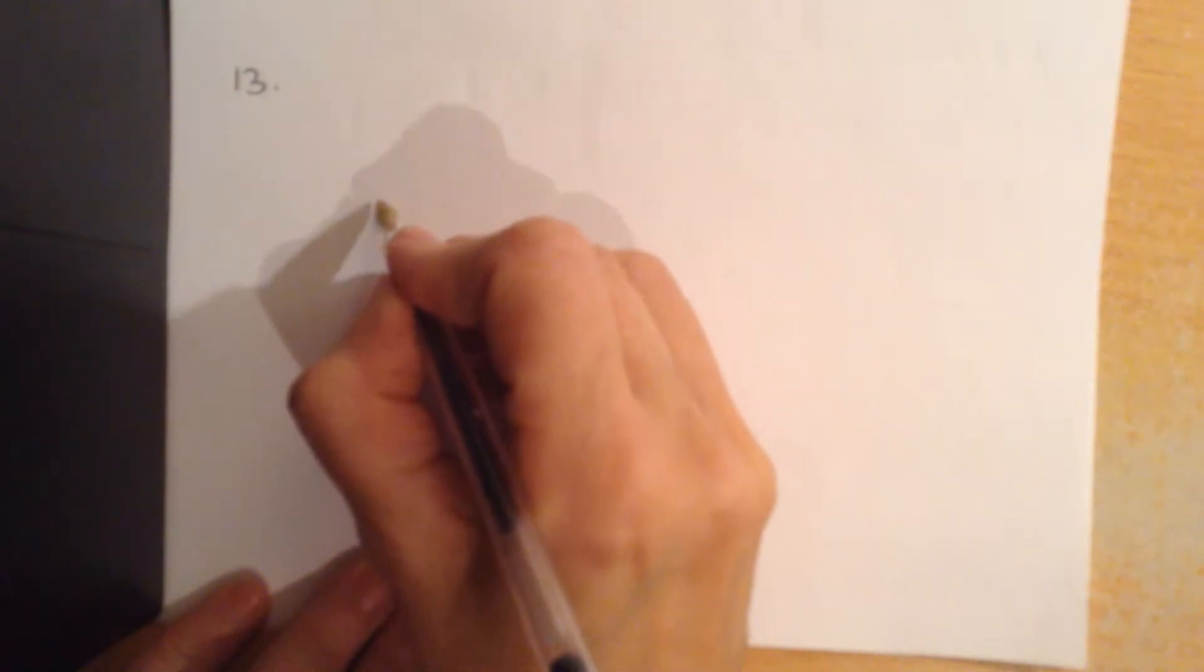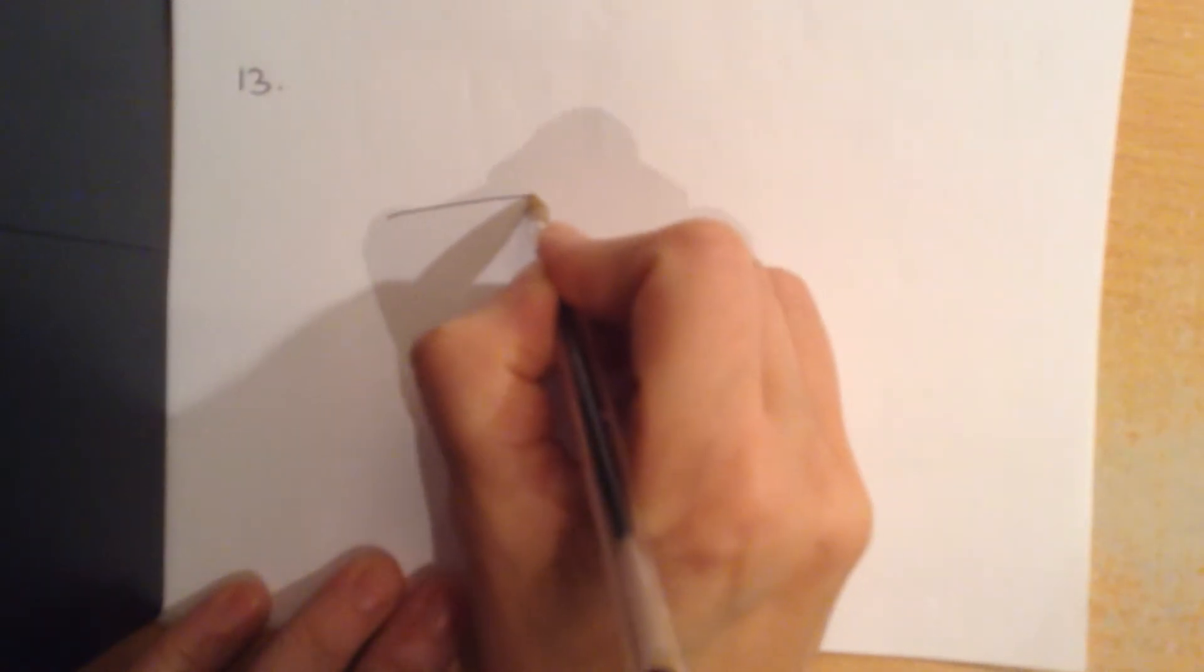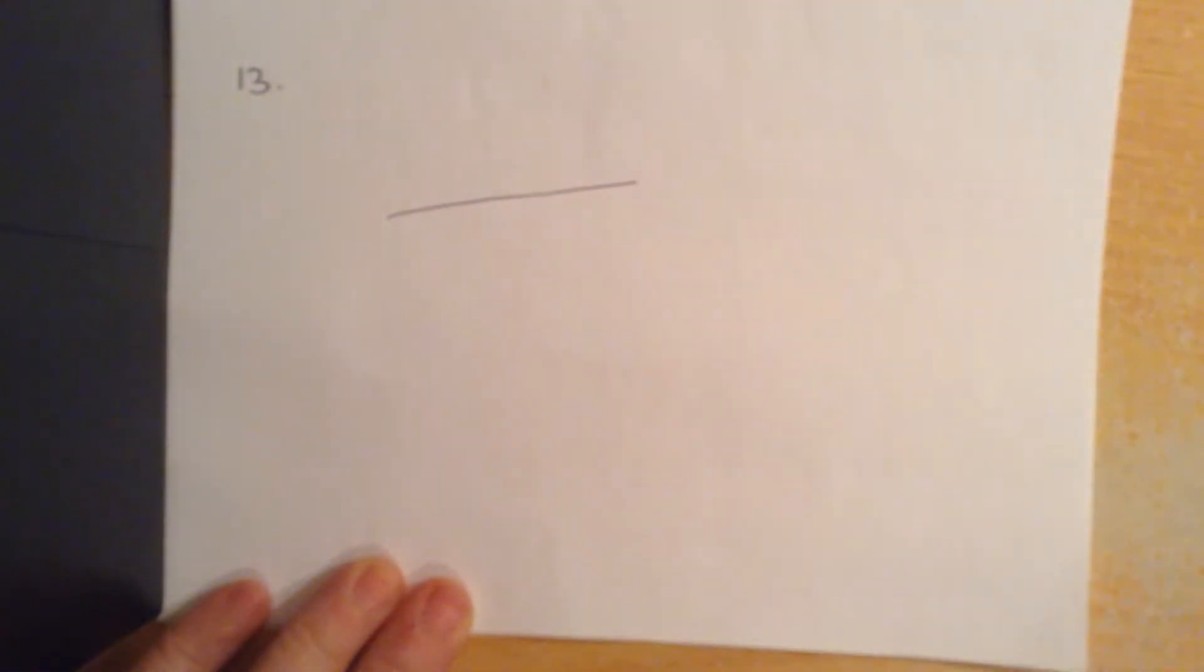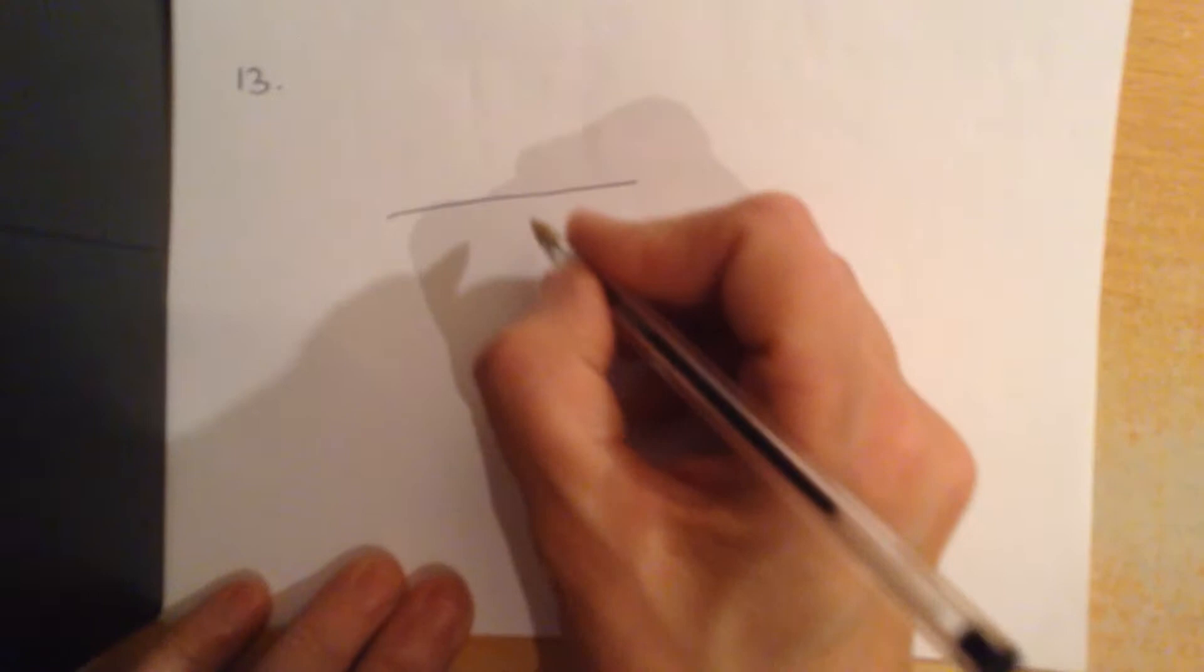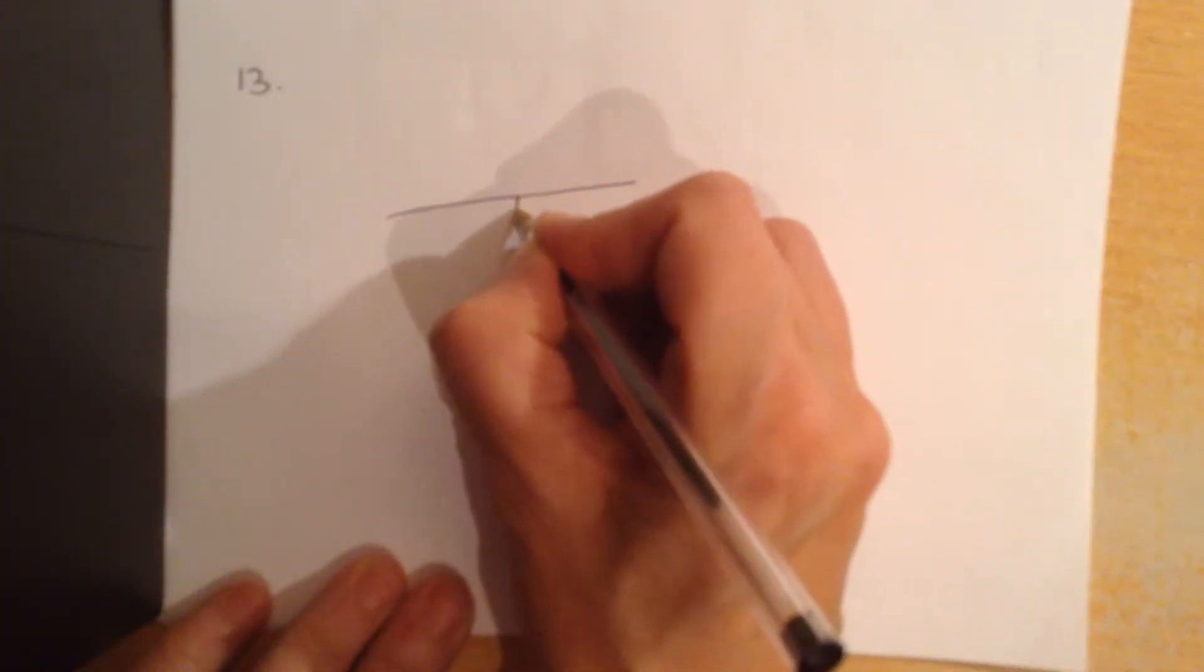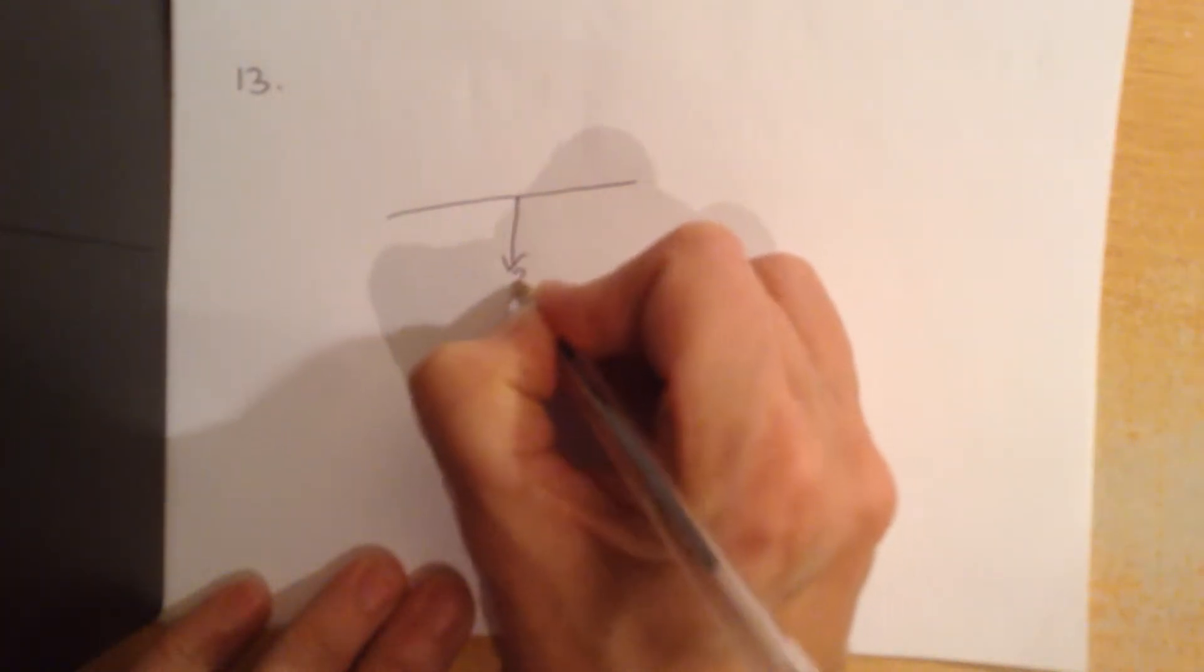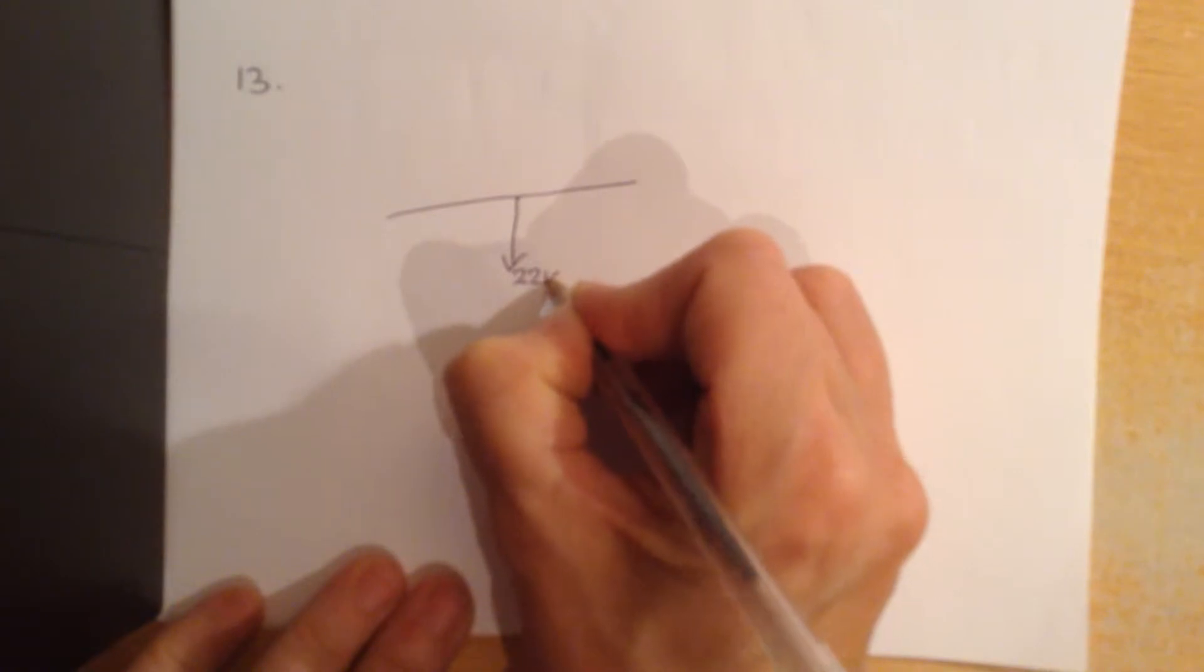Question 13 is about a cable. It's quite a weird one actually. It's saying that there's a long uniform steel girder of weight 22 kilonewtons, so in the middle its weight is 22 kilonewtons.